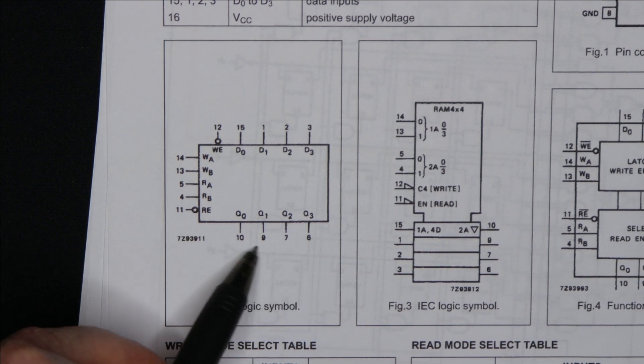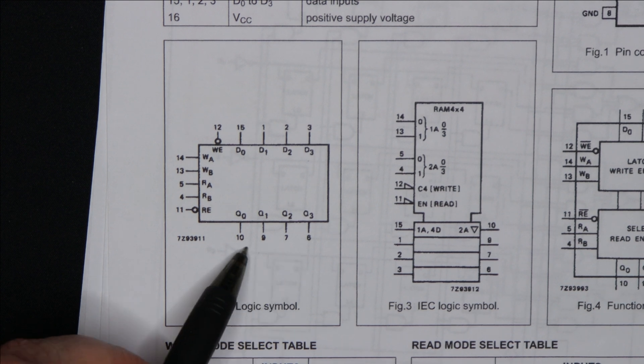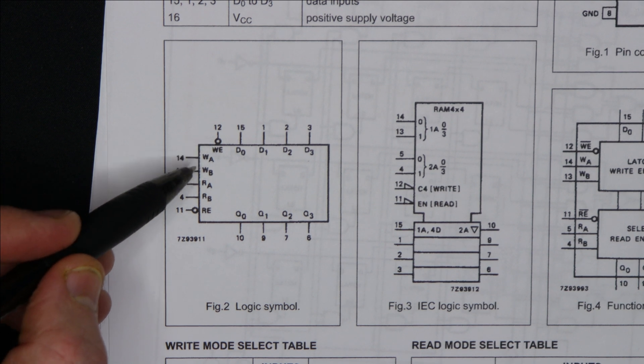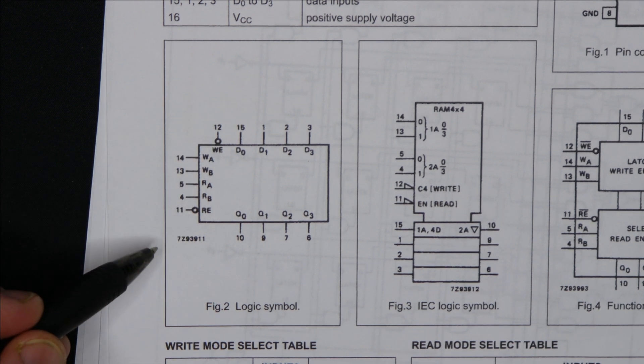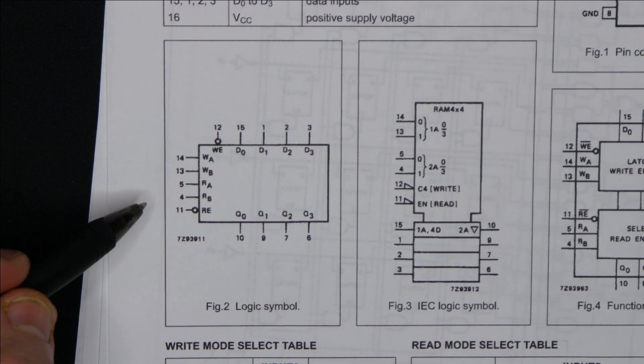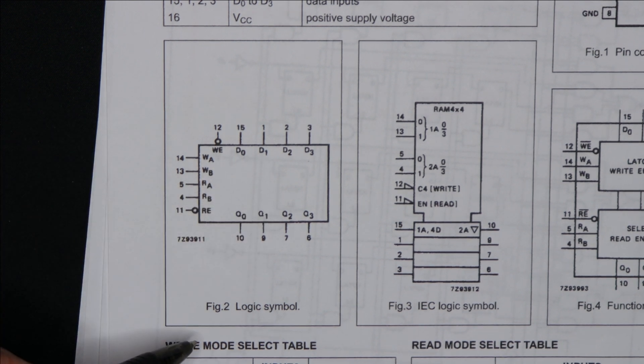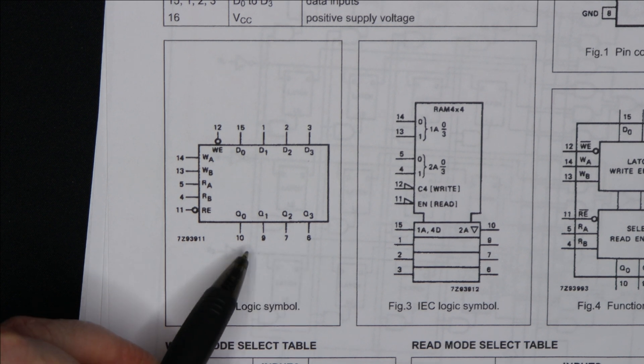If read enable is high, then the outputs are at high impedance. And it turns out these are latches. So if write enable is enabled and read enable is enabled, and the write and read addresses are set to the same location, then this just operates as a transparent latch. As the input changes, the output changes as well.